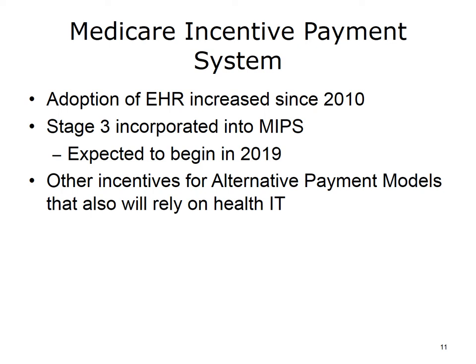These rules led to a rapid increase in adoption of EHRs. Stage 3 rules changed the focus from use of specific EHR features to a greater focus on quality outcomes and on interoperability in health information exchange. The Stage 3 criteria were incorporated into a new incentive program known as the Medicare Incentive Payment System, or MIPS, slated to take effect in 2019, which aligns a variety of incentive programs focusing on health care quality.